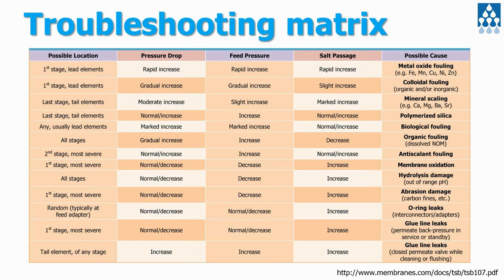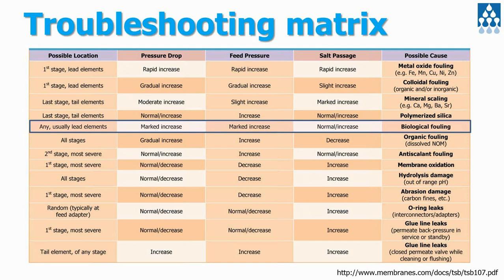When looking at all of the information, I tried to compile the different troubleshooting key indicators into a matrix. This gives an indication of where you might have a problem: what the problem is in each of those three key performance indicators, and critically, the possible cause. Most of these have fairly unique combinations, taken from quite a lot of the literature. They're usually fairly consistent, though some cases differ slightly. I've tried to take a general average of what this troubleshooting matrix should look like.